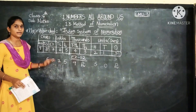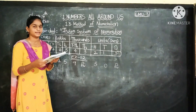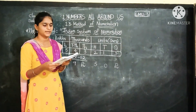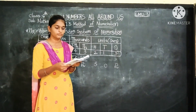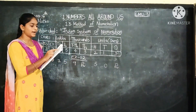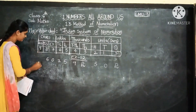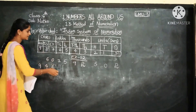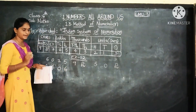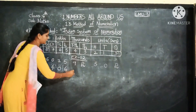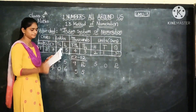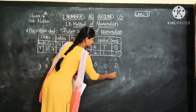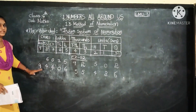The next example: 9 hundred 44 Crores, 66 Lakhs, 55 Thousand, 4 hundred and 86. So the numeral form is: 9 in Hundred Crores place, 44 Crores, then 06 Lakhs, then 55 Thousand, then 486. This is the process of how to write the numeral form.